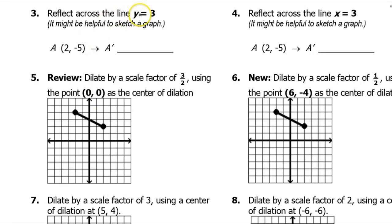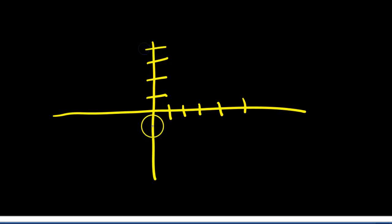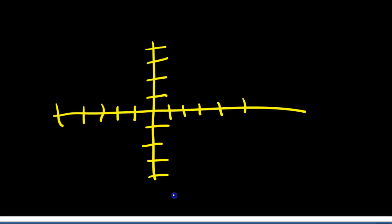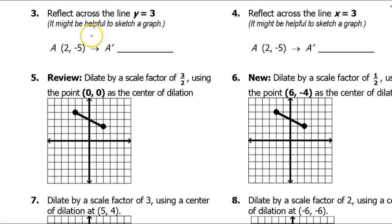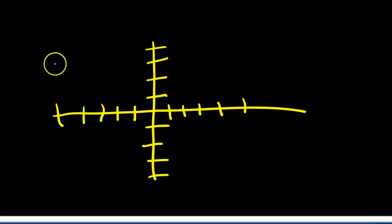Next, we need to reflect across the line y equals 3, and a sketch might be helpful. So y equals 3 is a horizontal line at 3. Let me do a quick sketch with the y-axis and x-axis. The line y equals 3 is a horizontal line at 3 — so this is the line y equals 3.